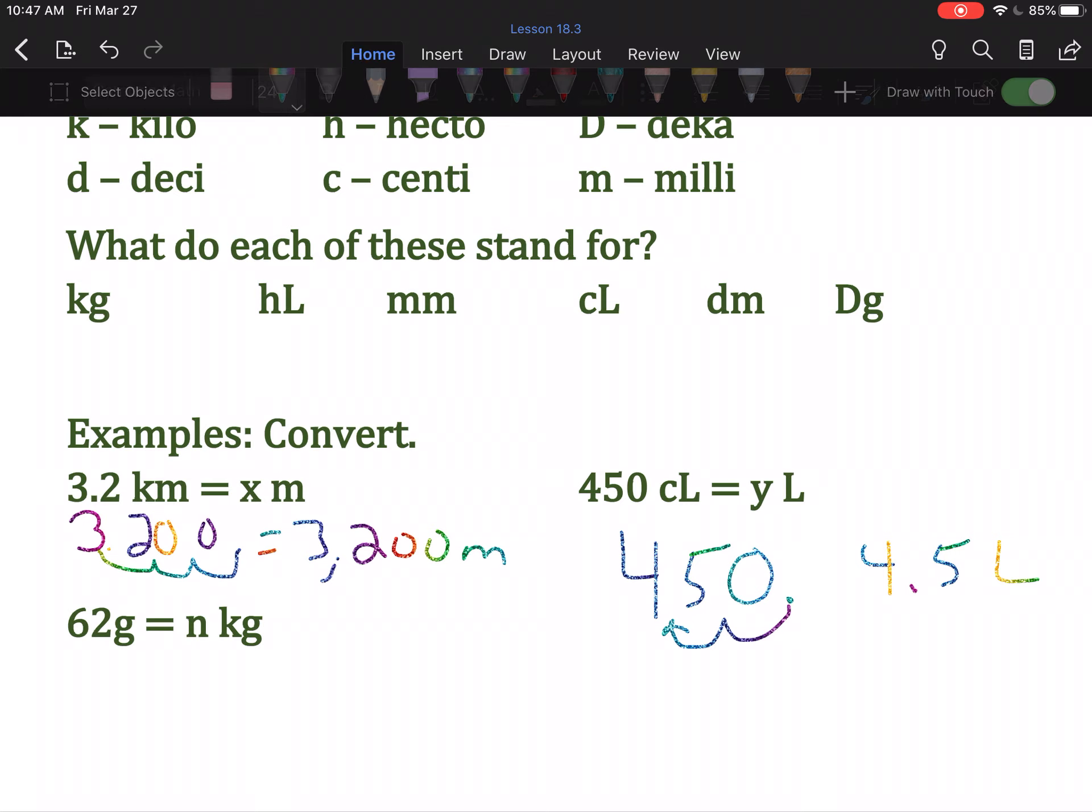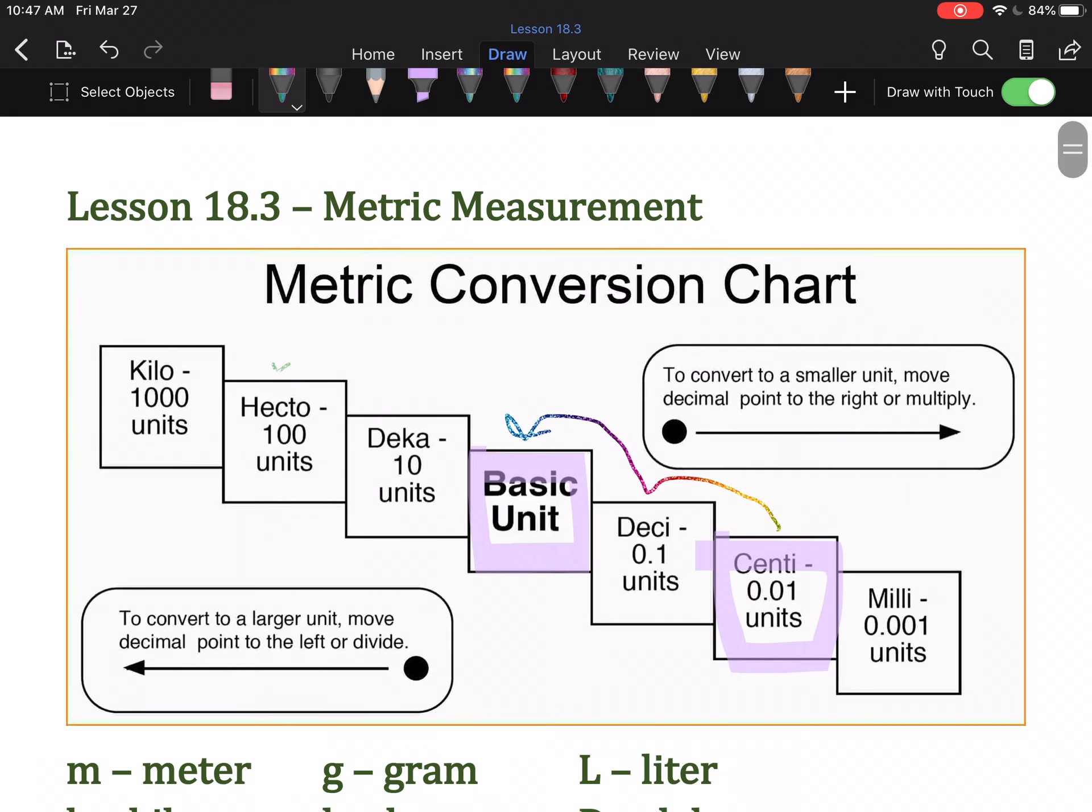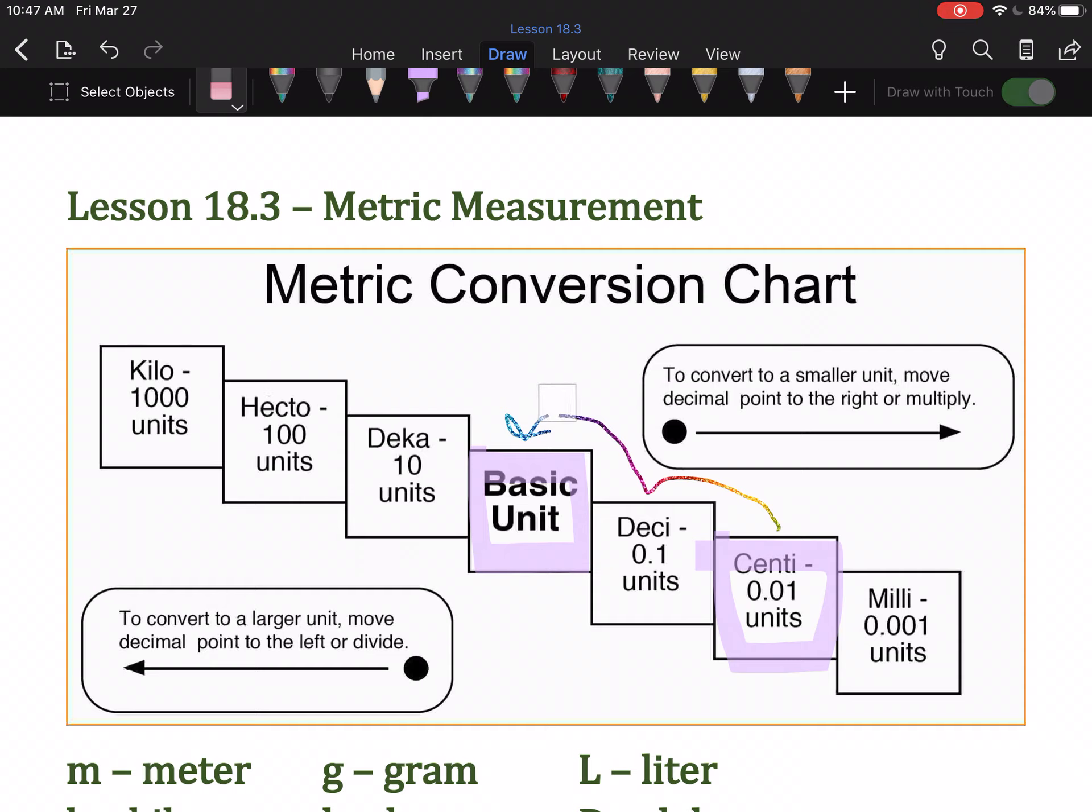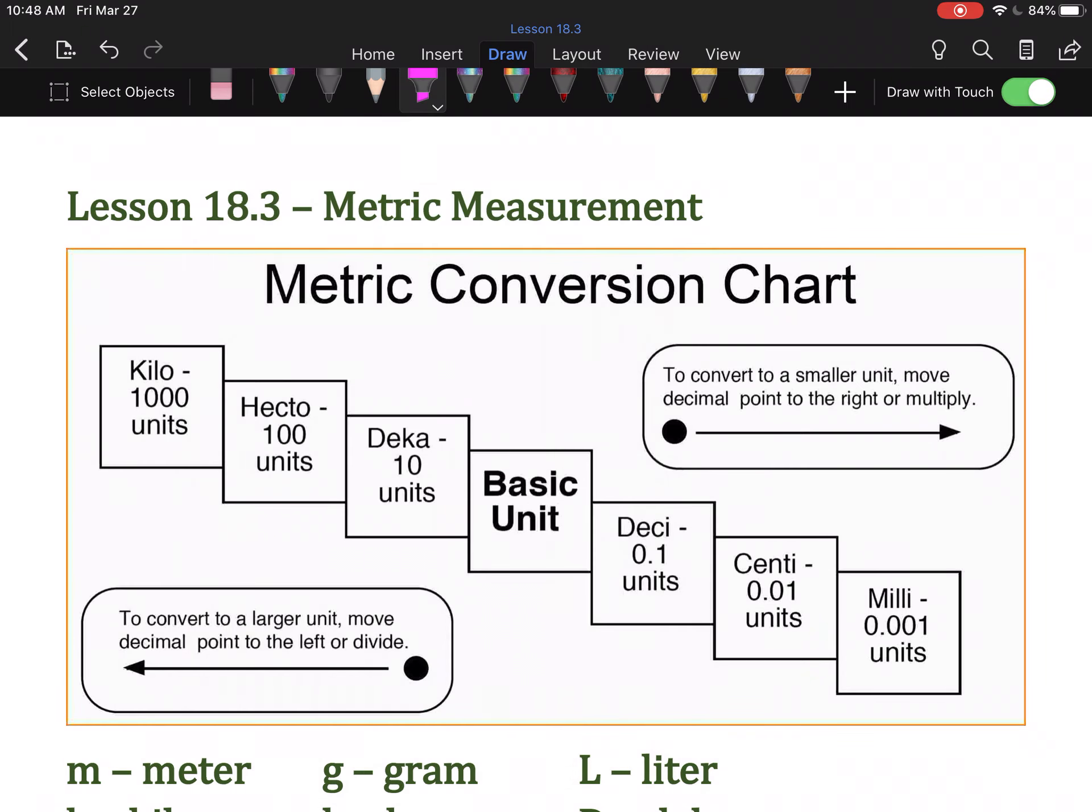So, my last example here, we have 62 grams becoming kilograms. So, let me get rid of our marks. And this time we are going from grams, which is a basic unit, to kilograms. So, we're going to the left. We're going up. So, one, two, three hops. Three steps to the left.